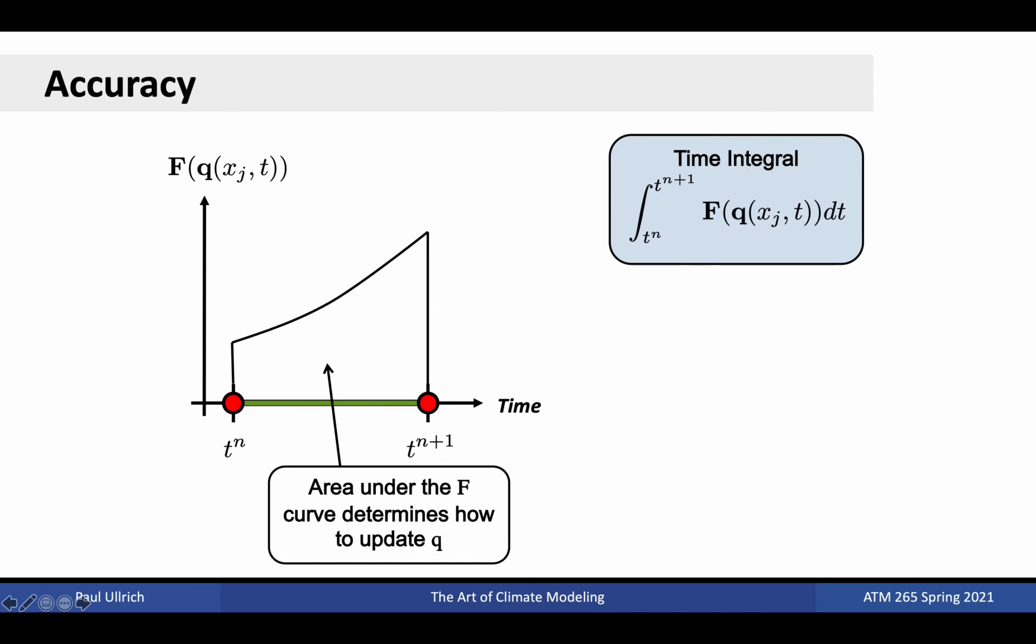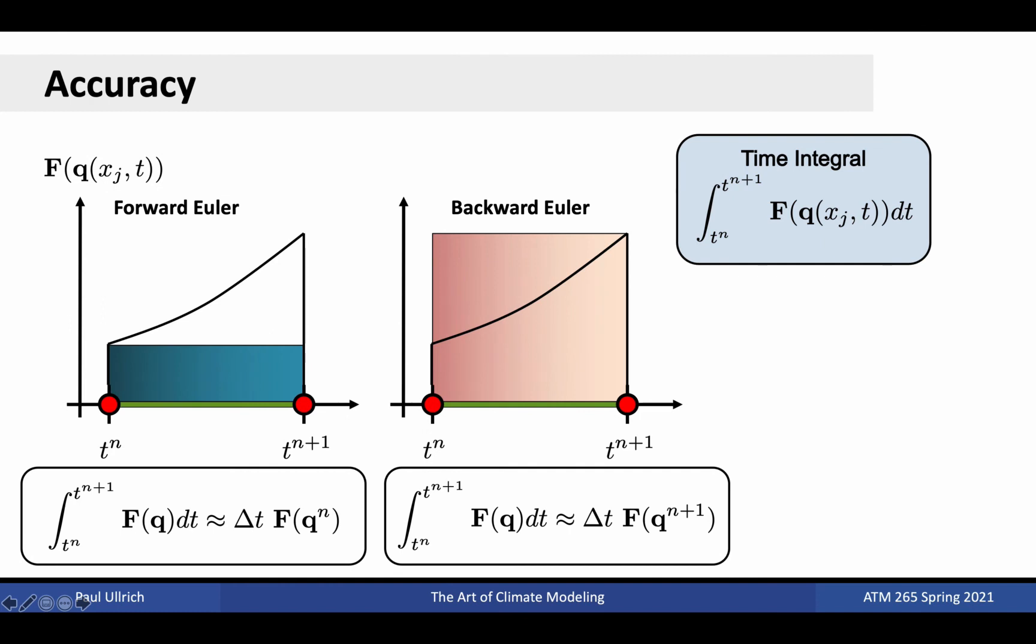Let's talk about accuracy, since this is another factor that plays an important role in the choice of temporal discretization. We're going to turn our time axis on its side for a moment and use the vertical axis to denote the value of the non-linear time tendency. If we were able to integrate exactly under the curve, then we would be able to perfectly advance the state in time. The methods we've discussed so far only allow us to approximate this integral. For both forward Euler and backward Euler methods, the time tendency over the whole time step is approximated as constant. This means that the integral ends up being approximated as a rectangle with one edge having length delta t.